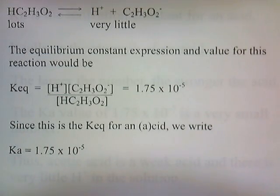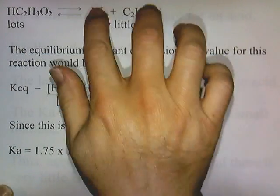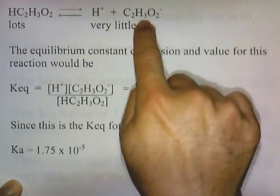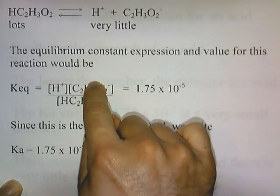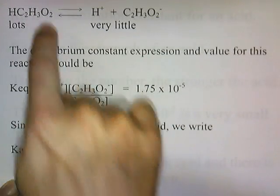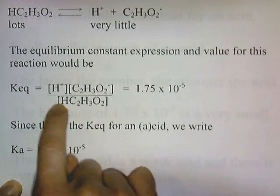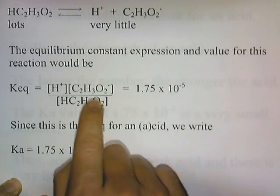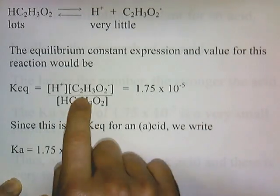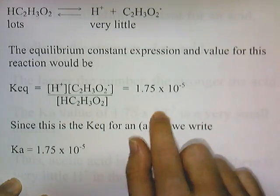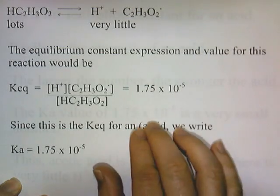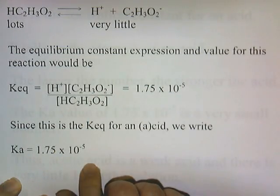The equilibrium constant expression and value for this reaction would be products over reactants. So H+ and acetate go on top, and then the reactants go on the bottom. KEQ equals this expression, and the actual value of the KEQ is 1.75 times 10 to the negative fifth. So that's the approximate ratio of products to reactants.